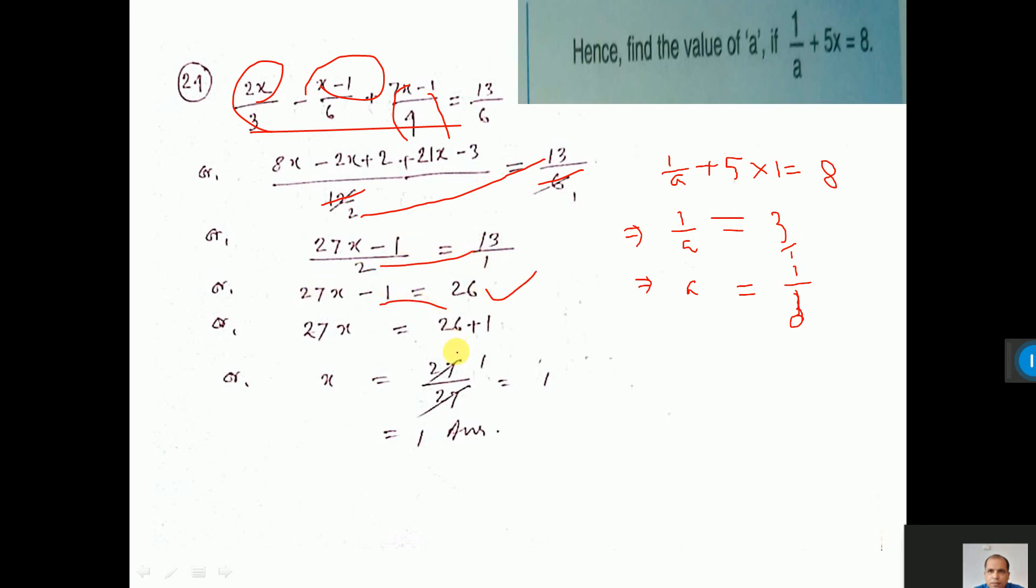Then 1 you take that side. It will be 27. 27 will go down. Cut-a-cut to 1. Now this x value 1 you put here. See here you put. And 5 you take that side. So it will be 3. 3 means 3 by 1.